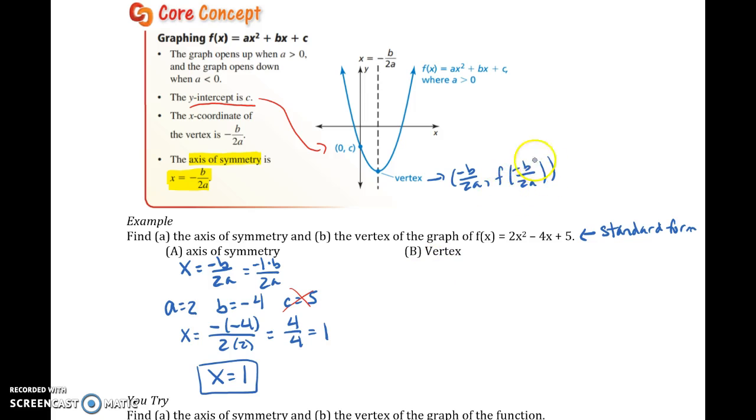Now, how do I find that vertex? Well, that's using the second piece. Let's find f of whatever the axis of symmetry is. So that is just basically saying, take this 1 and plug it in for x. So instead of having x, I'm going to take out x squared and put in 1 squared, right? Take out the x and put in 1, and then do your PEMDAS. Exponent first, then let's multiply, and then add and subtract.